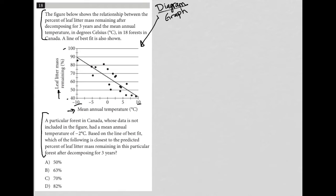The question says the figure below shows the relationship between the percent of leaf litter mass remaining after decomposing for three years and the mean annual temperature in degrees Celsius in 18 forests in Canada. So each of these little dots represents a forest in Canada. A line of best fit is also shown.